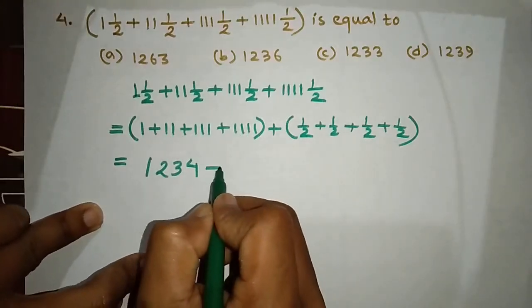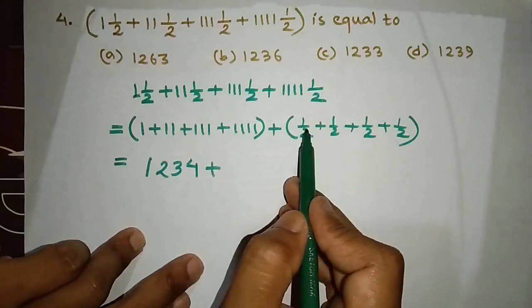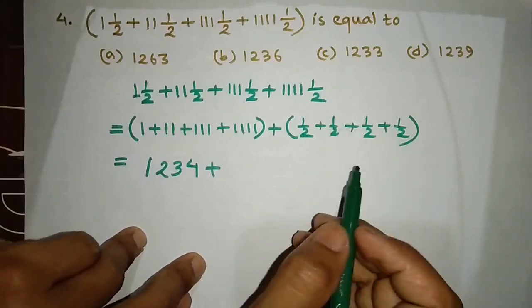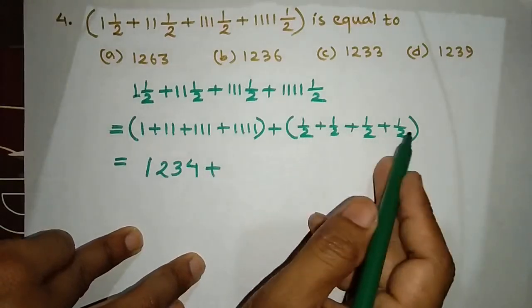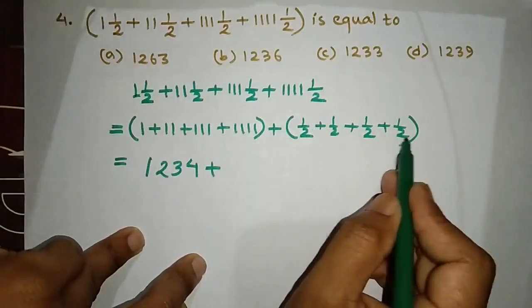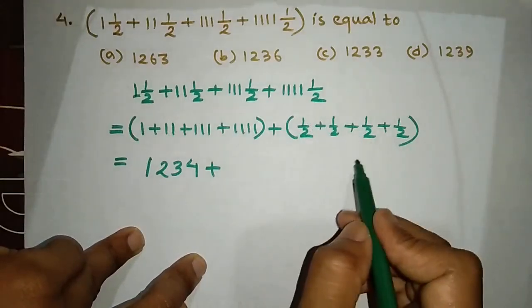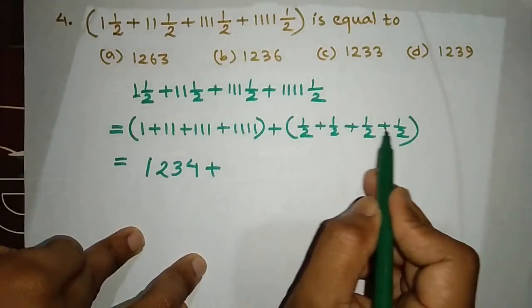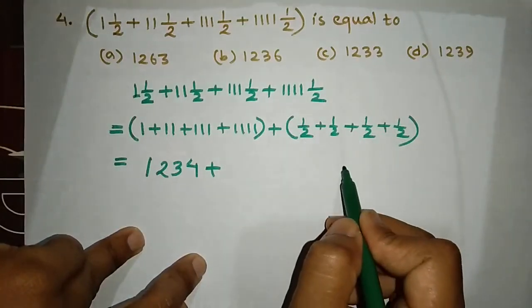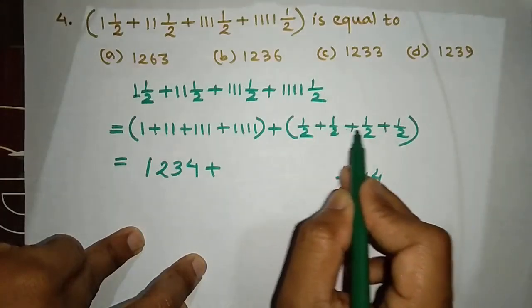One by two is just 1 by 2, and the first term will add more 1 by 2. One by two is more — adding another one will get more than 1 by 2.